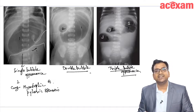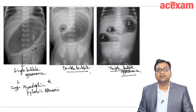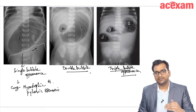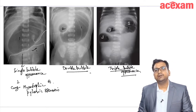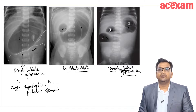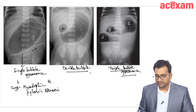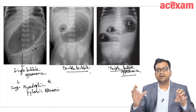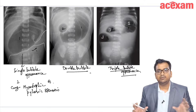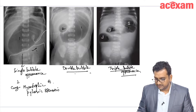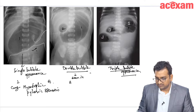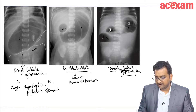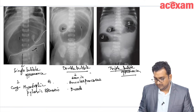Double bubble sign is seen when there is an obstruction at the level of the duodenum, which may be due to duodenal atresia or annular pancreas. You will see one duodenal bulb and one stomach bulb, giving a double bubble appearance. So this is seen in annular pancreas and duodenal atresia.